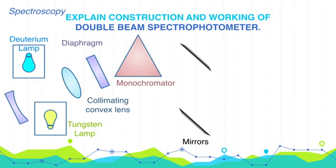After that, two plane mirrors are placed. These plane mirrors are used to change the direction of the beam of light. After mirrors, there are two cuvettes: one for the sample and one for the blank solution.